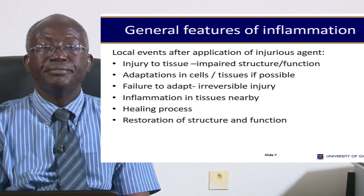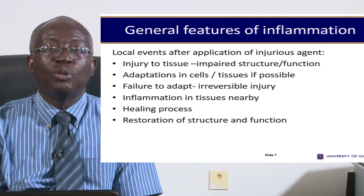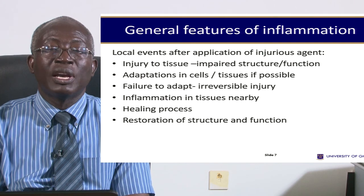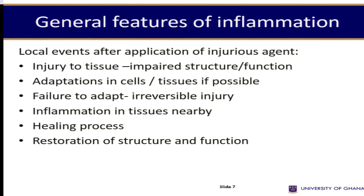The local events that occur when you apply an injurious agent and it leads to changes in the tissue are: first, impaired structure and function. The cells may adapt if possible. If they fail to adapt, the next thing that occurs is injury which may be irreversible. Inflammation occurs when the tissues are damaged irreversibly — the cells die. Then the tissues nearby will become inflamed. The process that occurs next after the inflammation will be healing, and eventually the area will be restored to some new or normal structure and the function may come back partially or fully.